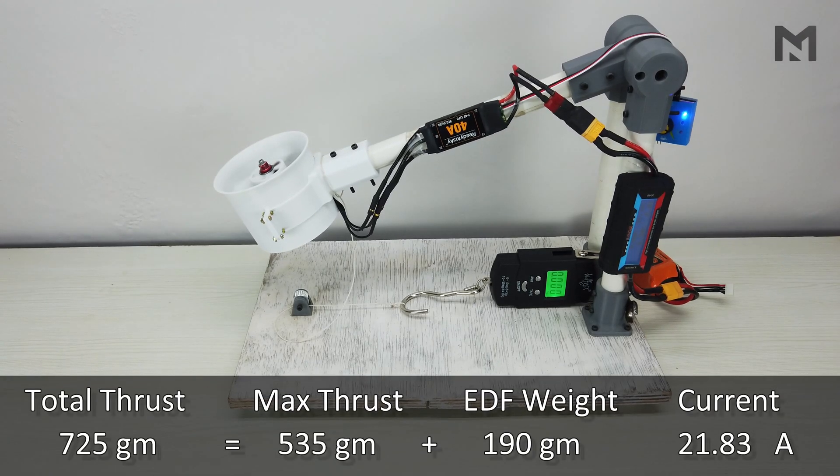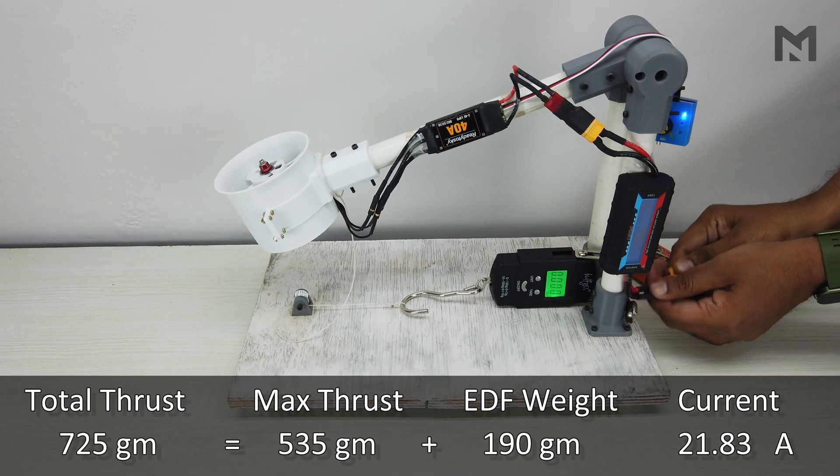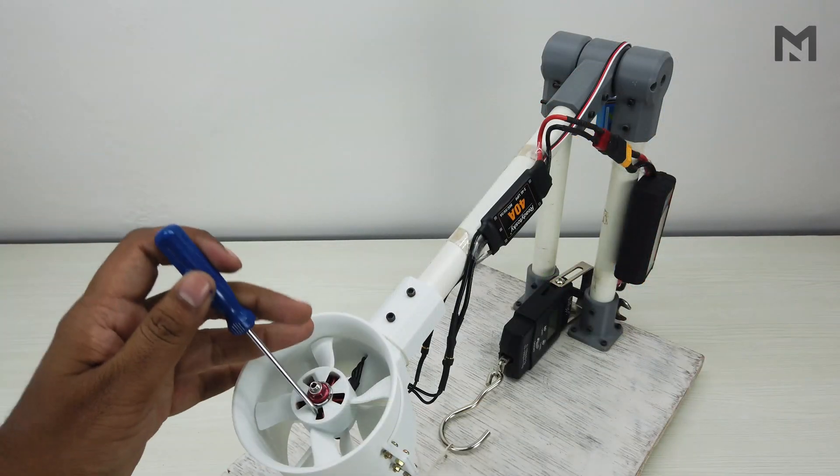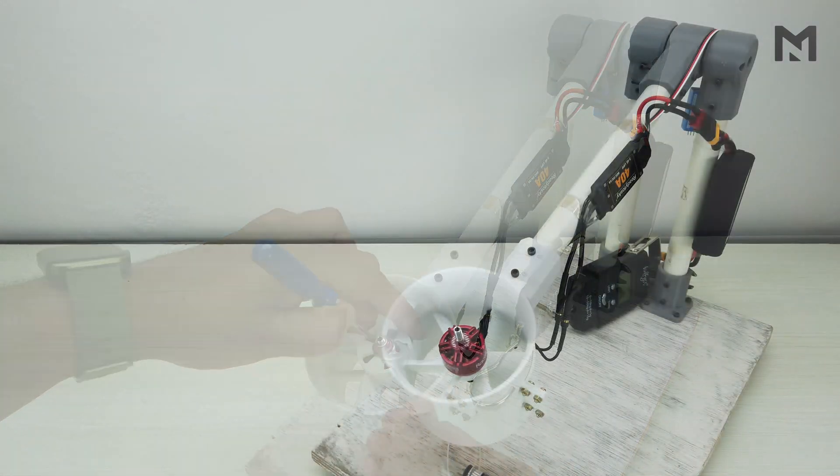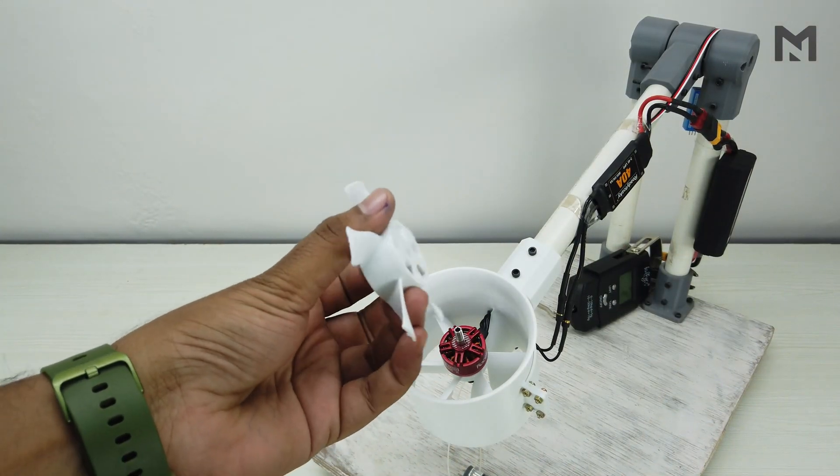We get a total thrust of 725 grams at 21.83 Amperes. Now I will swap this propeller with the 5 bladed one. Fix this 5 blade propeller on the EDF.